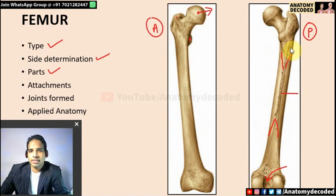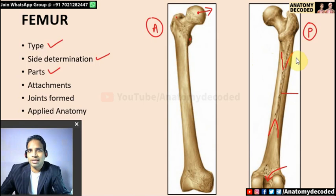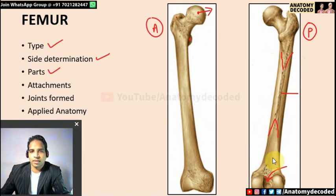Tracing the linea aspera upward, it splits: on the lateral aspect there is the gluteal tuberosity, and on the medial aspect there is the spiral line. Tracing downward, the splitting encloses an area called the popliteal surface of the femur.